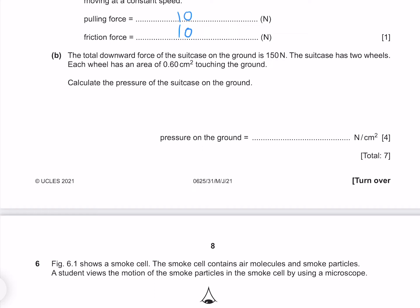The total downwards force of the suitcase on the ground is 150 newtons. The suitcase has two wheels. Each wheel has an area of 0.6 centimetre square touching the ground. Calculate the pressure of the suitcase on the ground. Pressure is force divided by area. Our force is 150, and because we have two wheels, our area is going to be 2 times 0.6, which gives me 125 newtons per centimetre square.